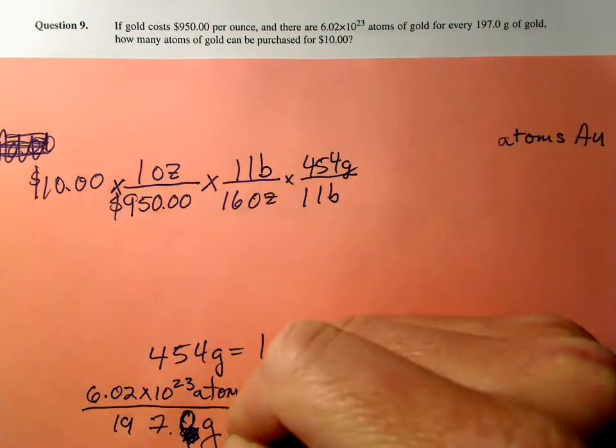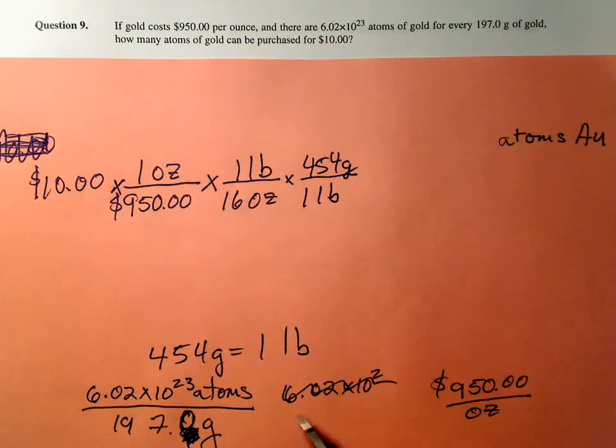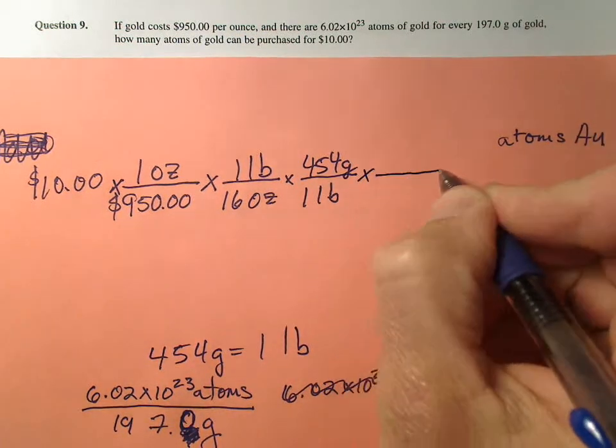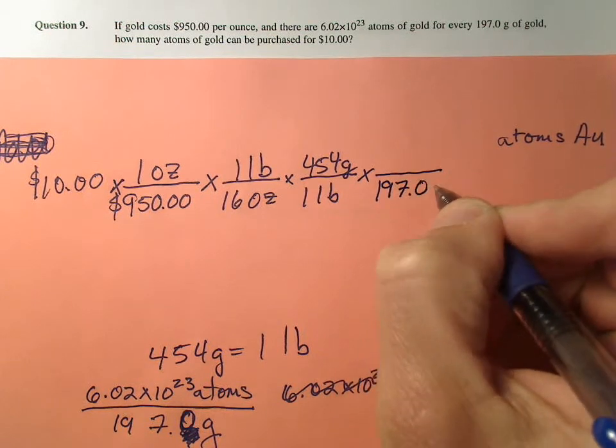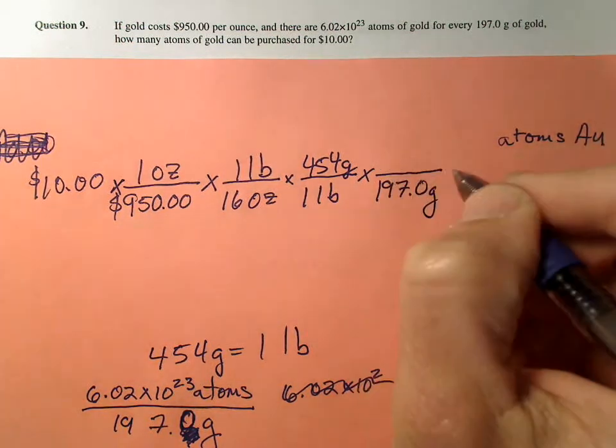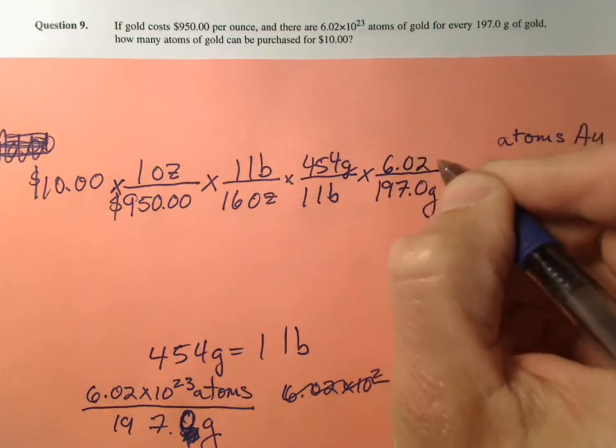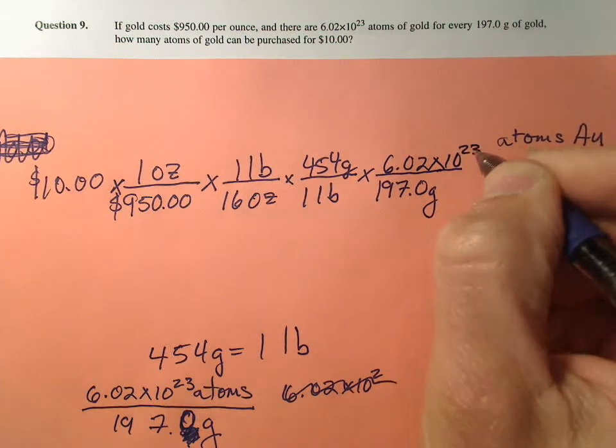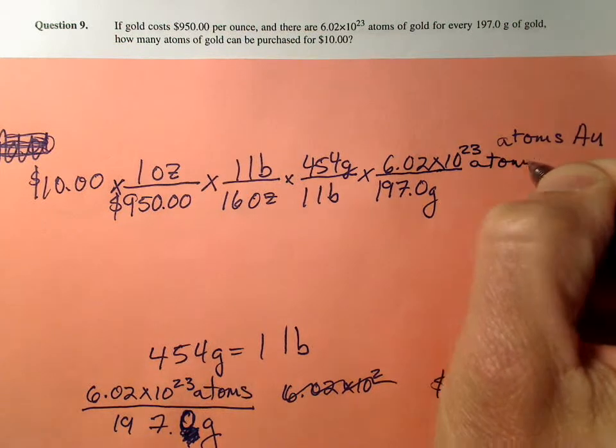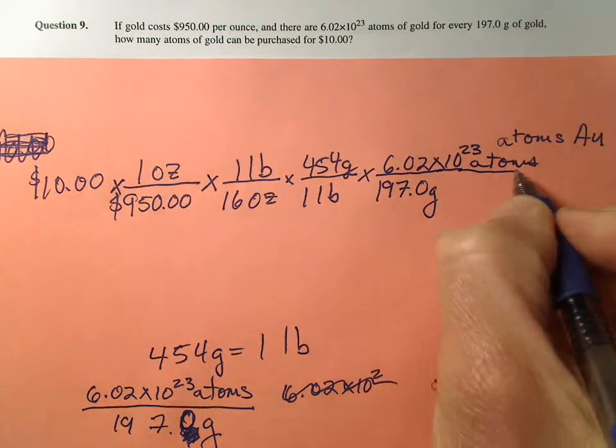And now I can use this conversion factor down here, the atoms to grams. Grams is going to go on the bottom - 197 grams of gold is a big honkin' number. 6.02 times 10 to the 23rd atoms.